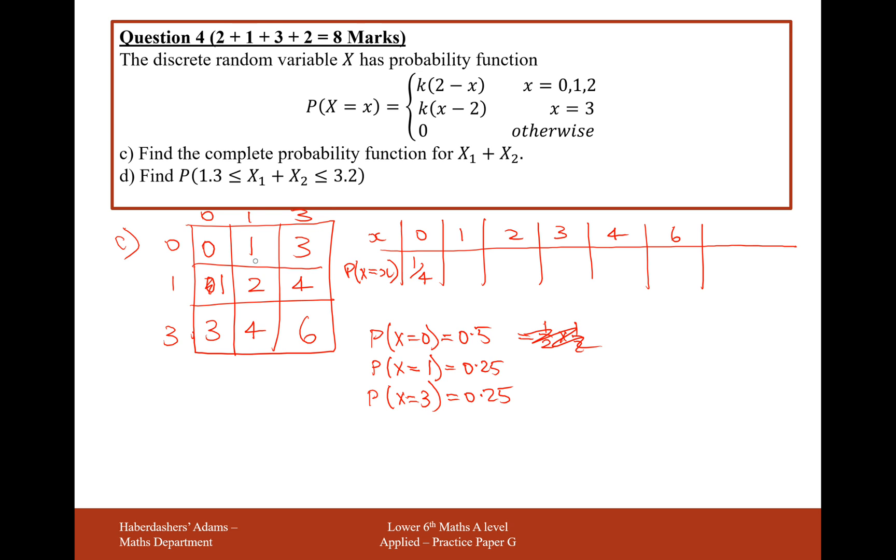The probability of them rolling a 1, there's two different ways in which they can do this. They can either roll a 0 then a 1, or a 1 then a 0. The probability of getting a 1 is therefore 2 times the probability of getting a 0, which is 0.5, times the probability of rolling a 1, which is 0.25. Effectively what we have here is a half times a half, which is another quarter.